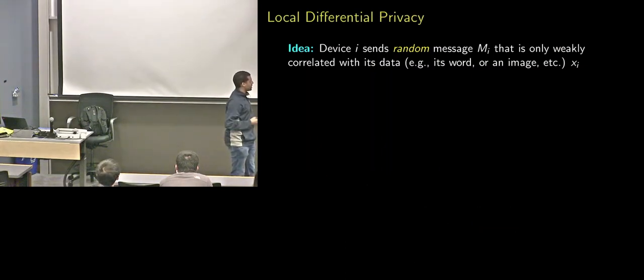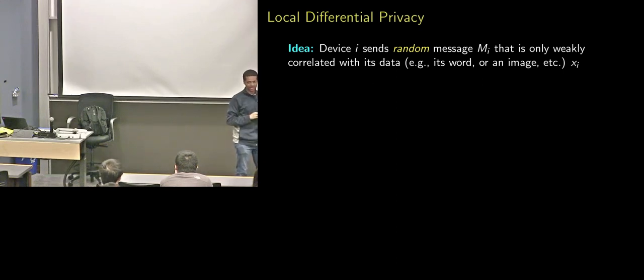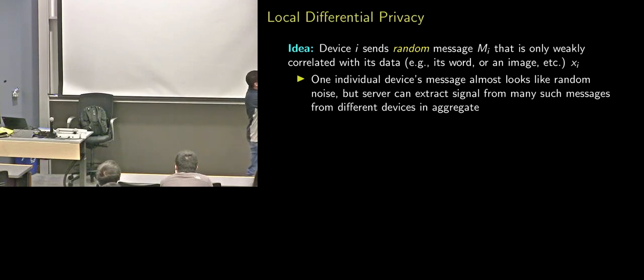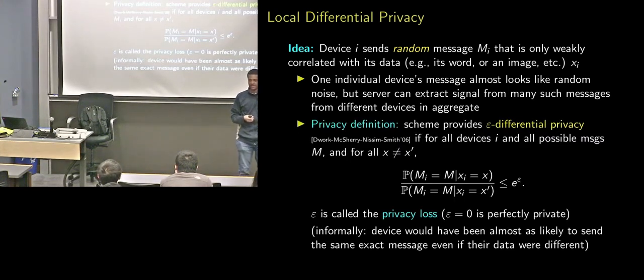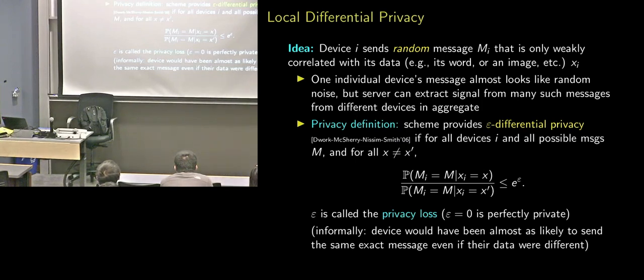We need to be careful with our definitions. We need to mathematically define what privacy means and then prove that whatever algorithm we're doing actually satisfies that definition. We're going to use a definition called local differential privacy — a gold standard in this area. The idea is that each device sends a random message M sub i that is only weakly correlated with its data X i. One individual device's message almost looks like random garbage, yet the server can extract from the aggregate.